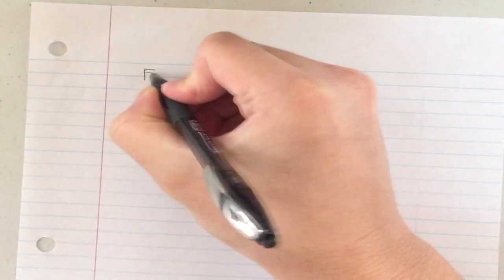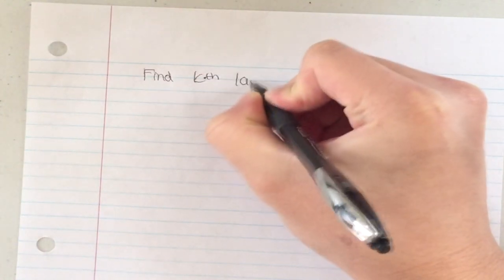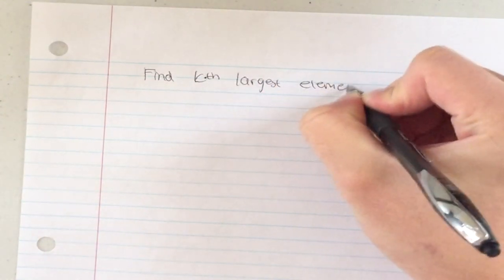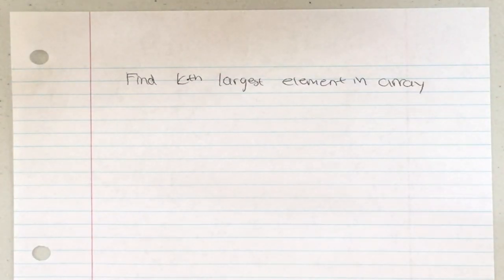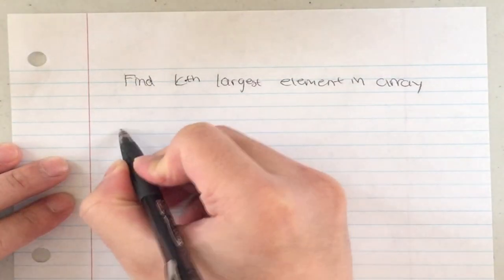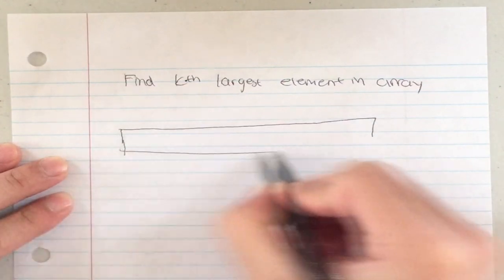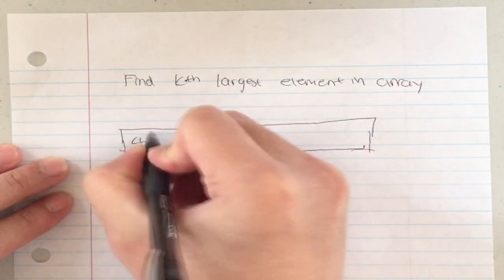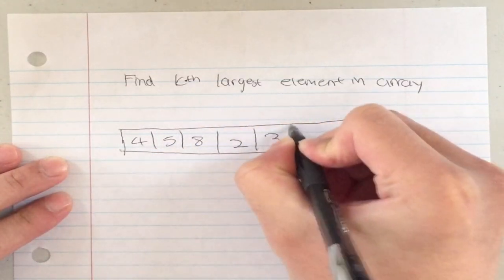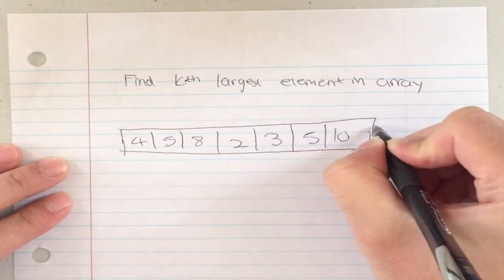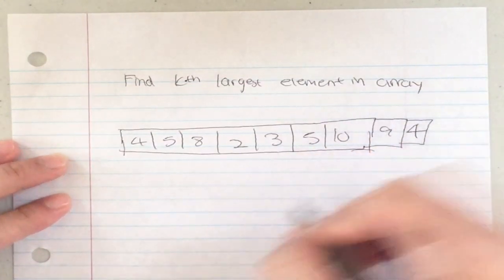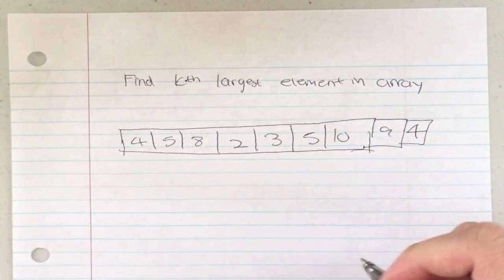So what does it mean to find the kth largest element in an array? Let's say I have an array of some random numbers: four, five, eight, two, three, five, ten, nine, and four.